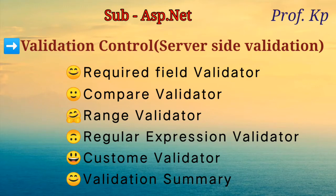Let's see the different types of validation controls in ASP.NET. First is Required Field Validator, second is Compare Validator, third is Range Validator, fourth is Regular Expression Validator, fifth is Custom Validator, and sixth is Validation Summary.